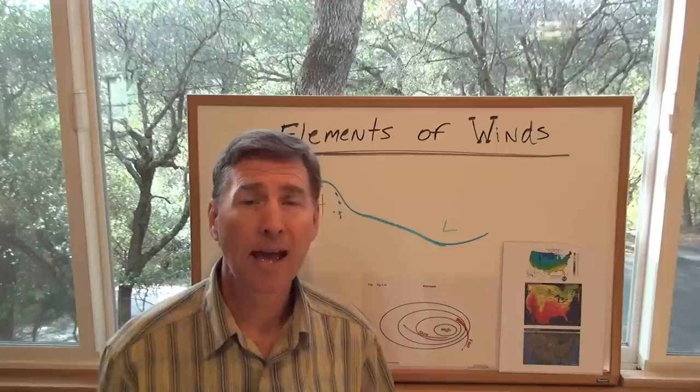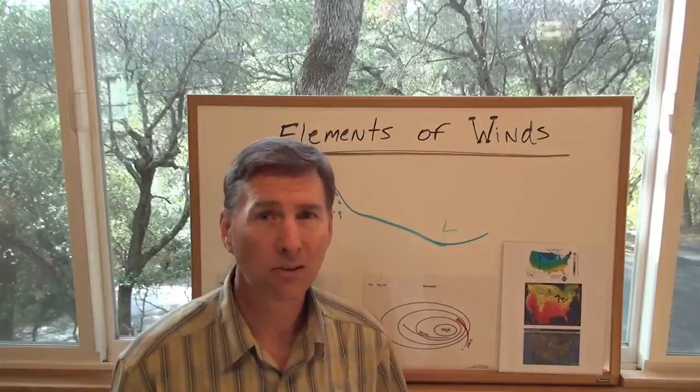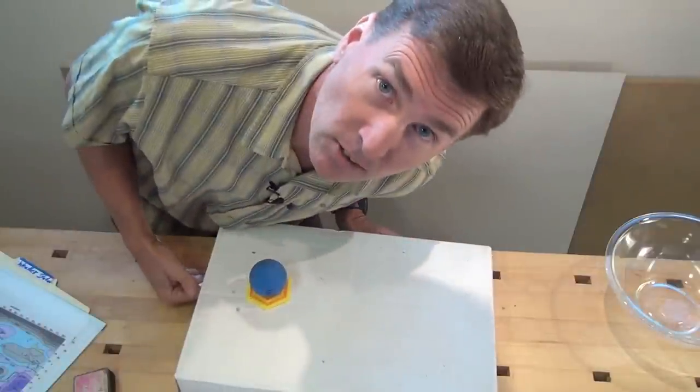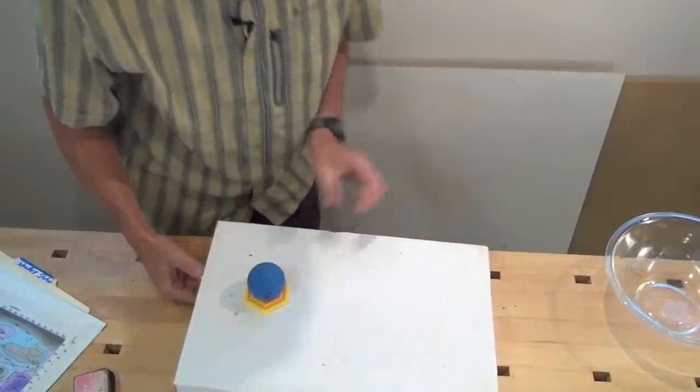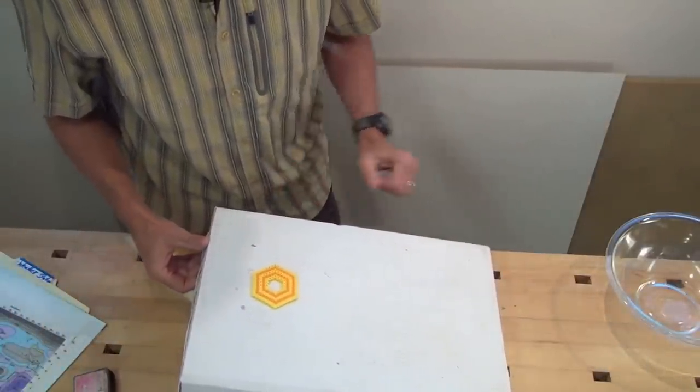But today I wanted to add another element called the Coriolis effect, sometimes known as the force. Okay, so here we are. We're going to recreate the gradient. So we just have a ball, boom, it goes down the slope.